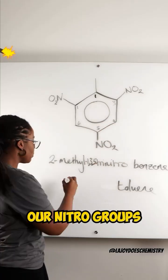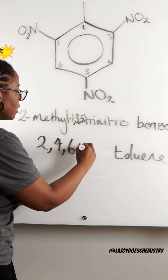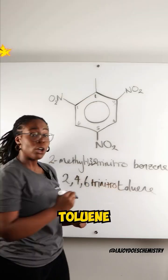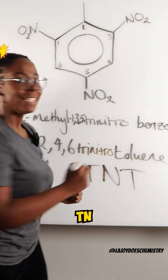And then our nitro groups are now on carbons two, four, six, trinitro toluene, or TNT.